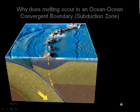So why does melting occur at an ocean-to-ocean convergent boundary or subduction zone? Well, as the plate is subducting, it is, of course, getting hotter. But that can't be enough. Otherwise, the increased temperature would melt the asthenosphere anyway. And the asthenosphere is not molten.